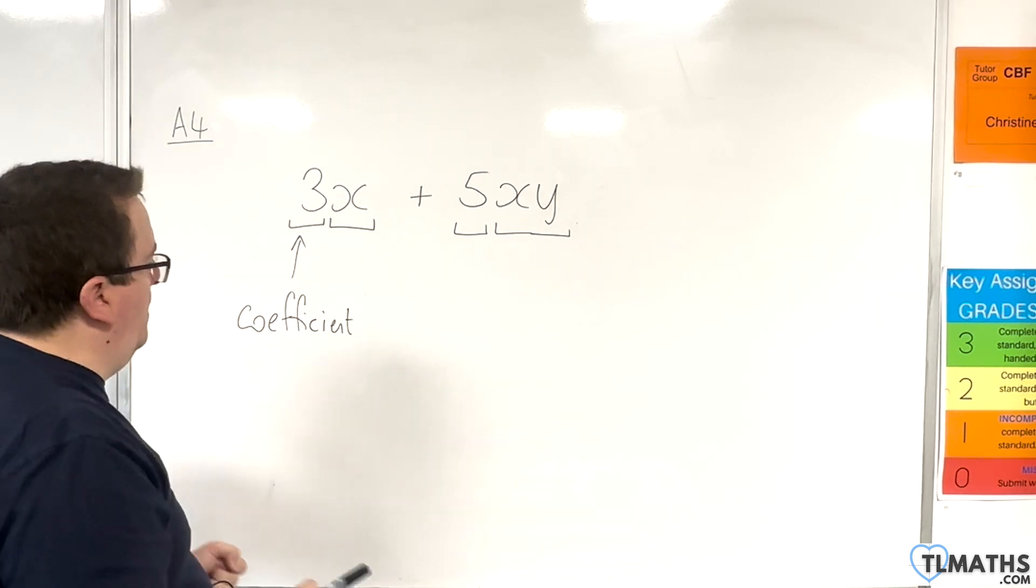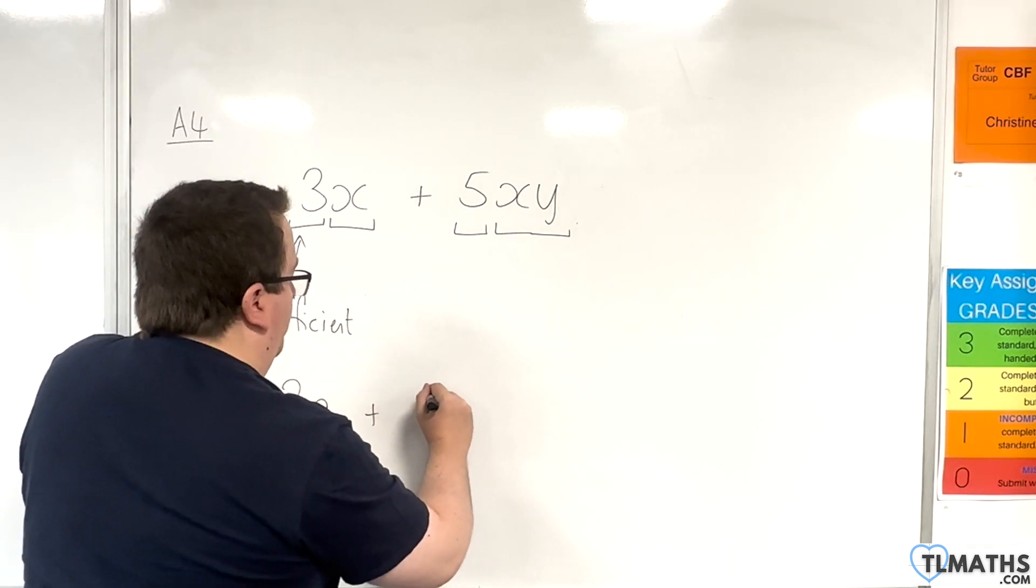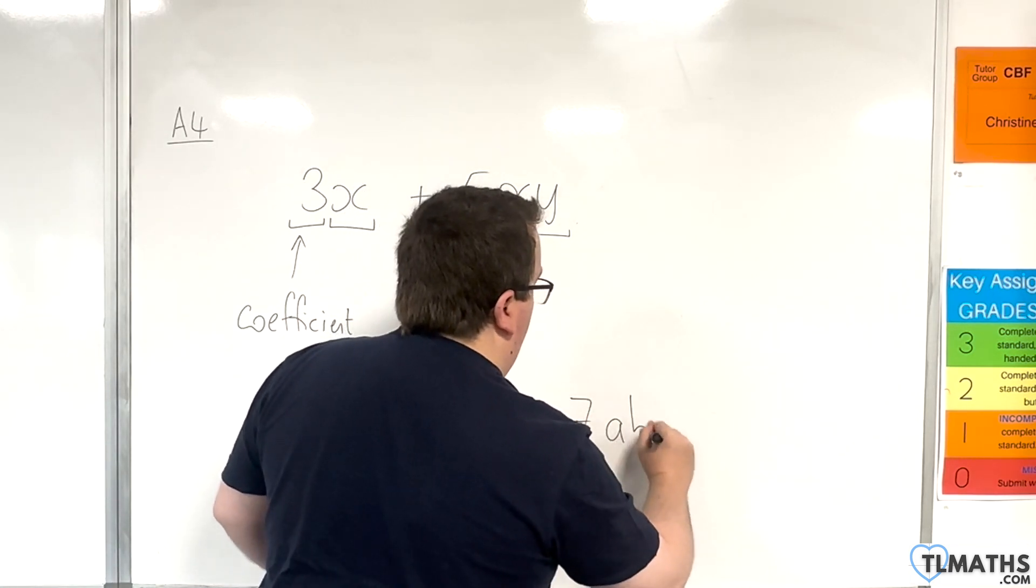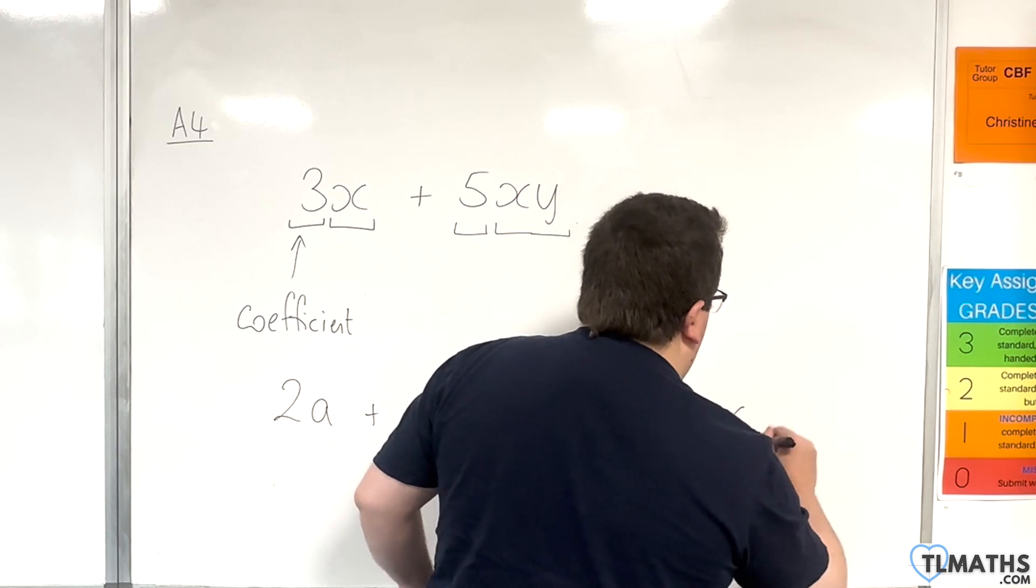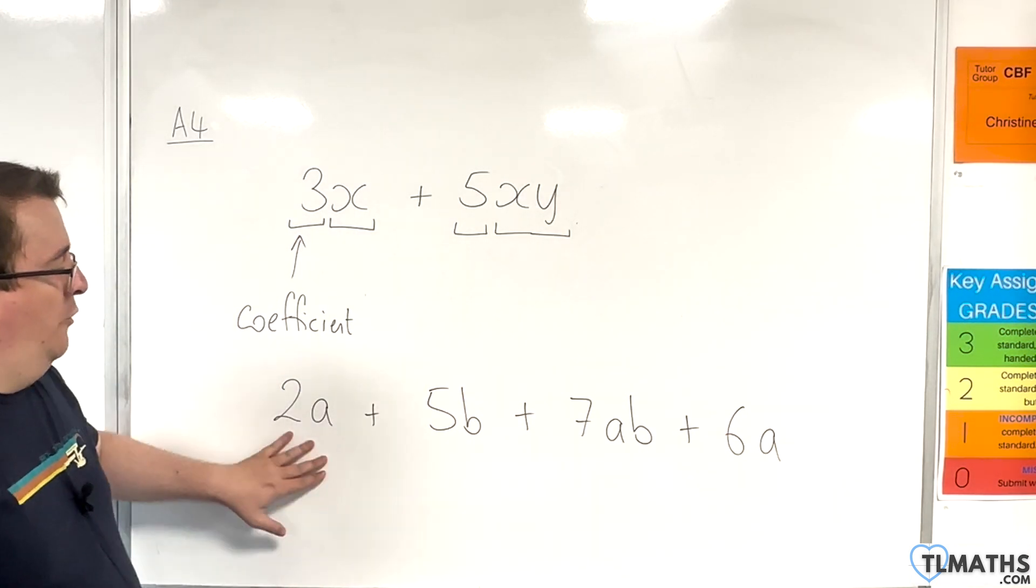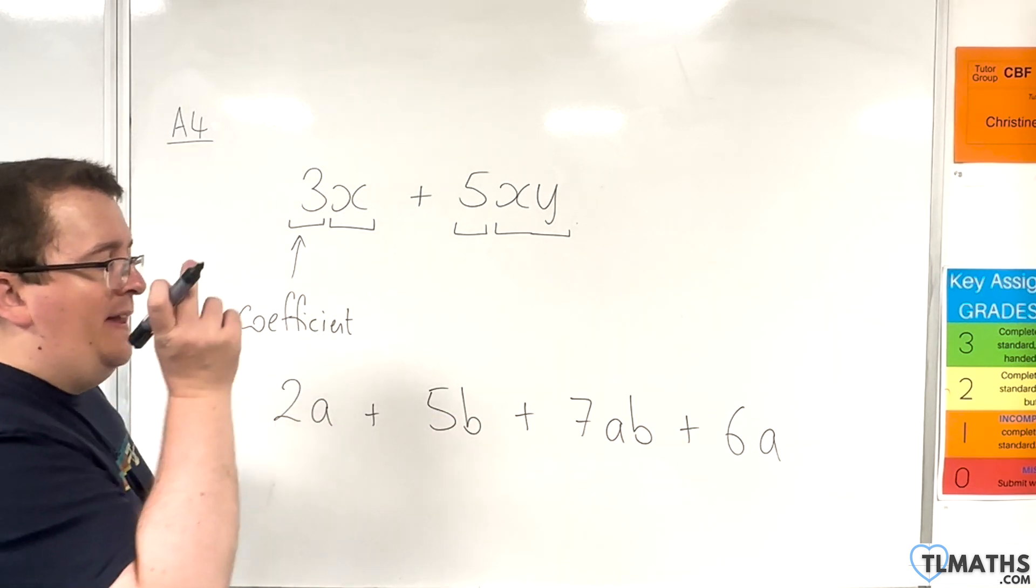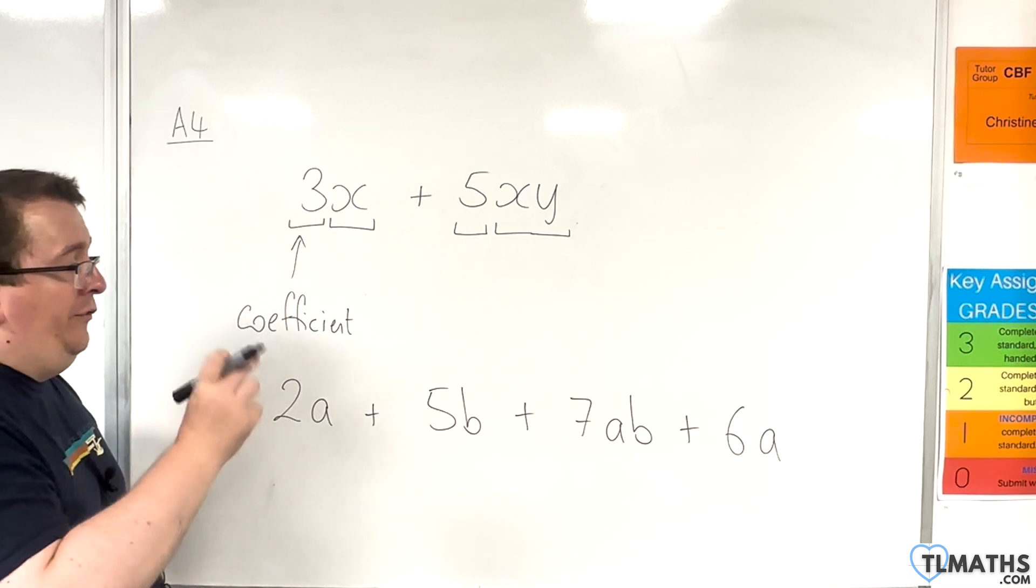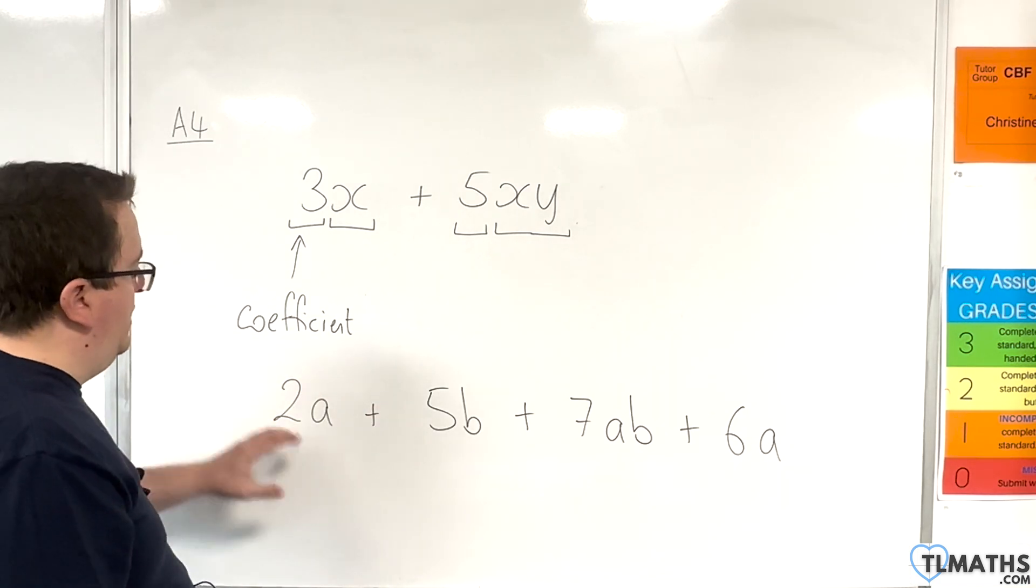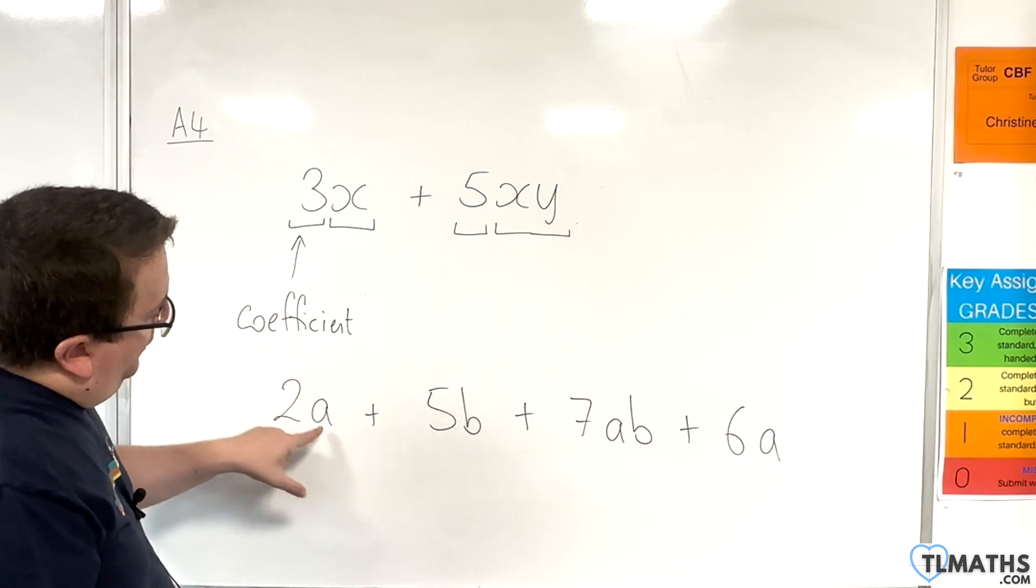Let's take a look at one more example. Let's say I had 2a plus 5b plus 7ab plus 6a. So I've got 4 terms. So what you're looking for is whether the algebra bit is the same in any of these cases. So regardless of what the coefficient is, don't worry about that, you're looking just at the algebra bit.